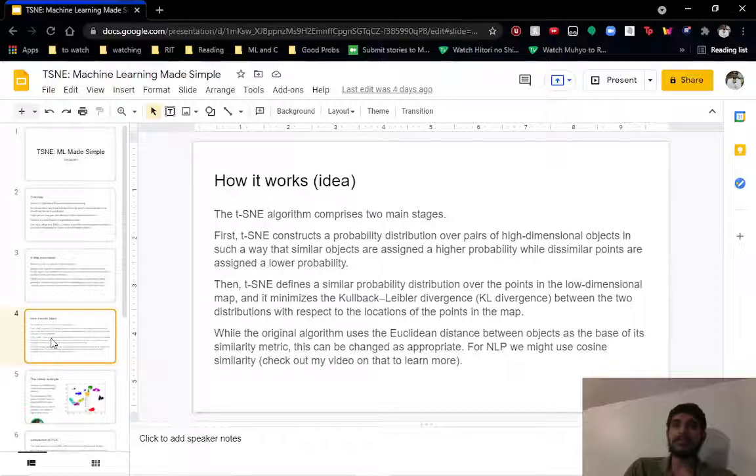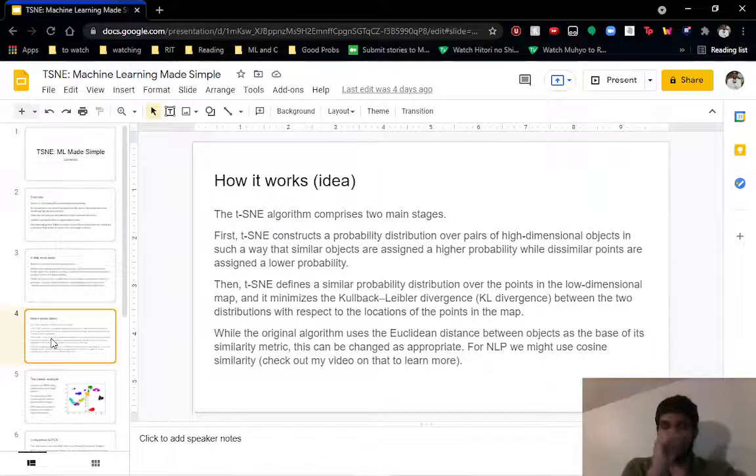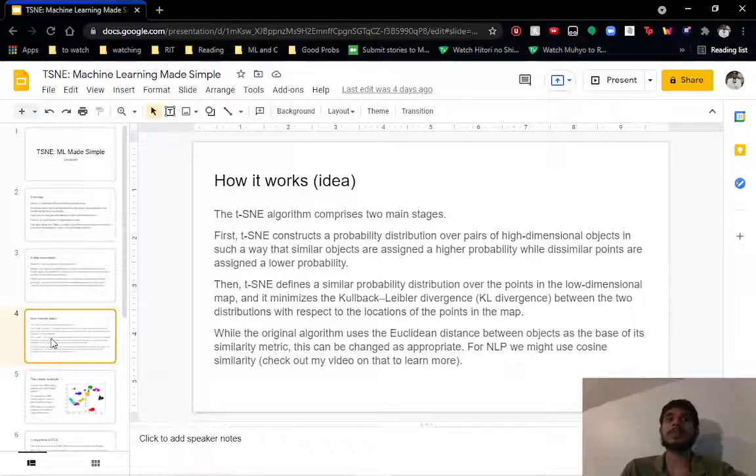Then once we have this TSNE probability distribution created, we try to reverse engineer points in lower dimensions. We take the similar probability distribution and try to see, if our probability is 0.5, how do we get 0.5 given two inputs in lower dimensions? Instead of two bank customer objects which are 150 dimensions, we will just try to find two arbitrary points with two dimensions that will match the probability distributions. We try to minimize the KL divergence, the Kullback-Leibler divergence, between these two probability distributions.